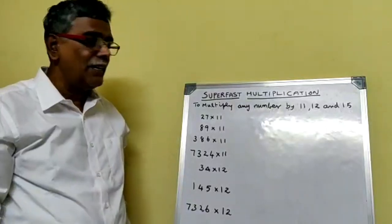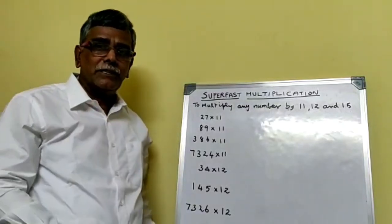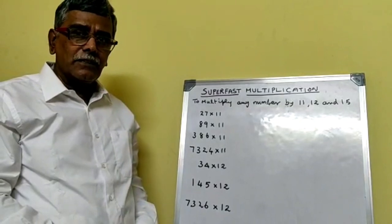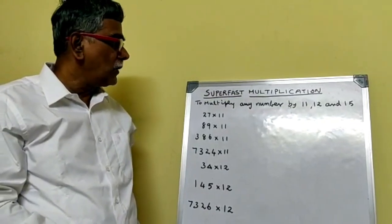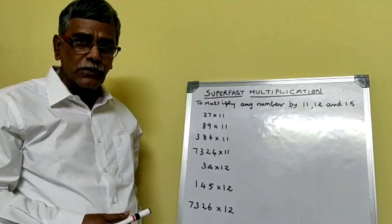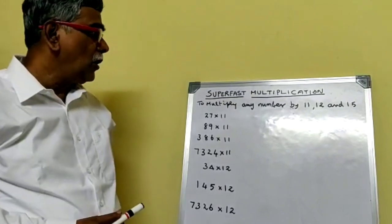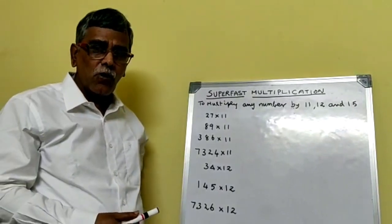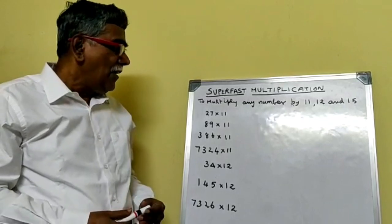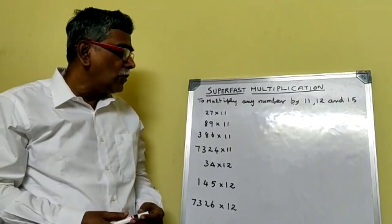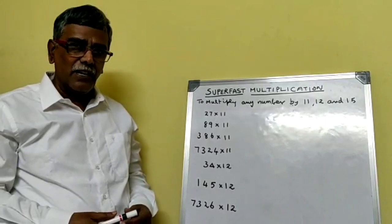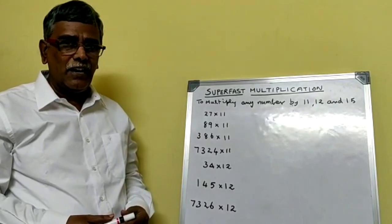Hello viewers, welcome to Gigi's Study Circuit Clinical. In the last few sessions we have seen quick squares. From this video onwards we will see some super fast multiplication. First we will see how to multiply any number by 11, 12, or 15.